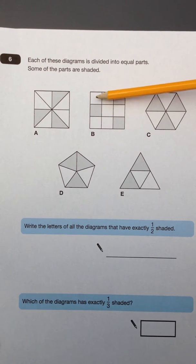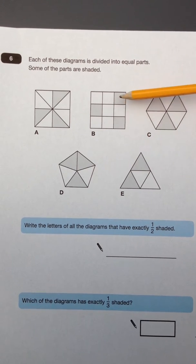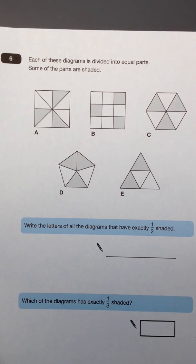B has been divided into 9 pieces. Half of 9 is not a whole number, so there would not be a whole number of squares shaded. So B does not have exactly half shaded with those 3 out of 9.